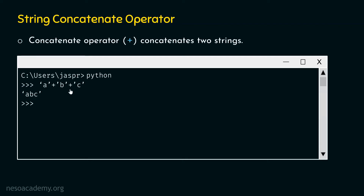The result will be ABC as expected. We have three strings with one character each. If we use plus operators between them, we can concatenate and combine these strings. When we hit enter, we will get ABC as a result. To combine three strings at a time, we need two concatenate operators. To combine ten strings, we need nine concatenate operators. Note that one concatenate operator can only combine two strings at a time.